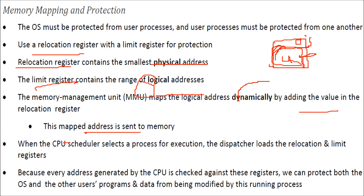When the CPU scheduler selects a process for execution, the dispatcher loads the relocation and limit registers. Since every address generated by the CPU is checked against these registers, we can protect both the operating system and programs from one another, preventing data from being modified accidentally by a running process.